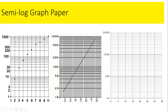For the second cycle, starting from baseline 10, the multiples are: 10, 20, 30, 40, 50, 60, 70, 80, 90, 100. Then the third cycle starts at baseline 100 with multiples: 200, 300, 400, 500, 600, 700, 800, 900, and 1,000.